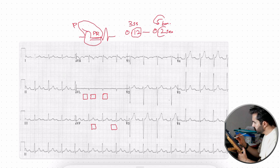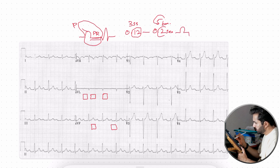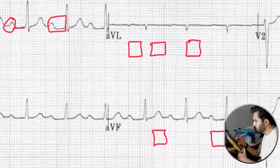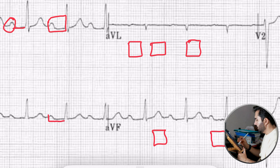The normal PR Interval is 0.12 to 0.20 seconds, which corresponds to 3 small boxes to 5 small boxes on the ECG paper. This is the standard normal PR Interval range. For example, on an ECG, you identify the P-wave and then measure to the start of the QRS to find the PR Interval.